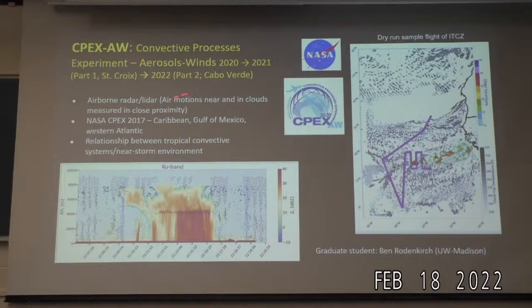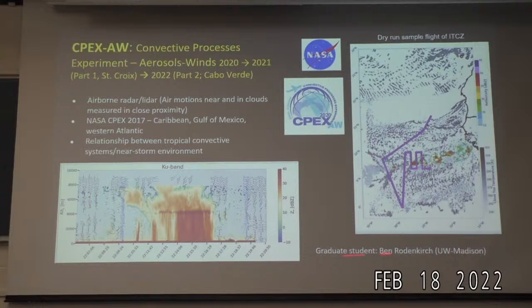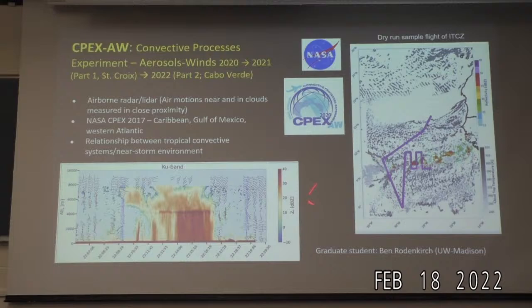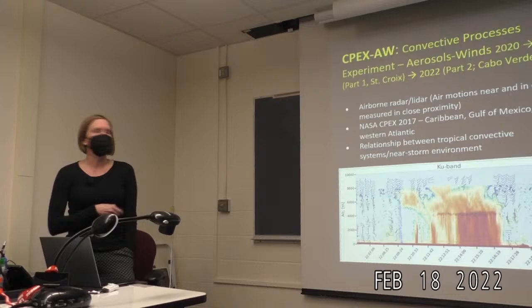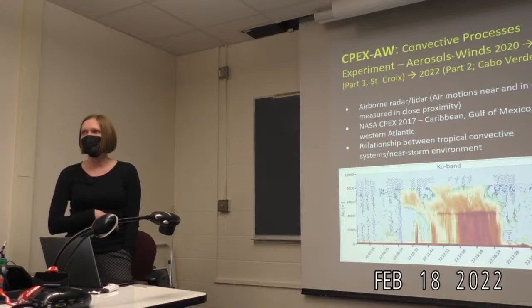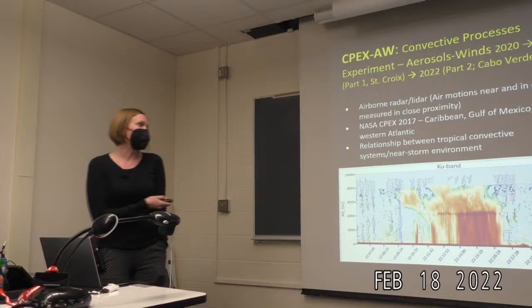Another project that was supposed to happen in 2020 is an airborne project sponsored by NASA. It's a unique opportunity to look at the three-dimensional structure of tropical oceanic convection from radar. We also have a Doppler wind lidar on the aircraft, so we can get wind very close to the convection. Graduate student Ben Roddenkirk is looking at an earlier campaign in the Caribbean and Gulf of Mexico, and we're going back out this summer focusing on the intertropical convergence zone.